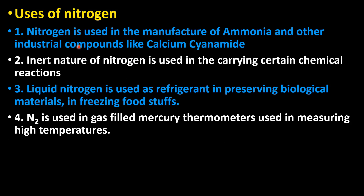Uses of nitrogen: Nitrogen is used in the manufacture of ammonia, which is largely used in the manufacture of fertilizers like ammonium sulfate, diammonium phosphate, urea, etc. Nitrogen is also used in the manufacture of industrial compounds like calcium cyanamide. The inert nature of nitrogen is used in creating inert atmospheres required for carrying out certain chemical reactions.